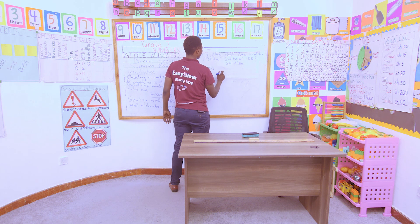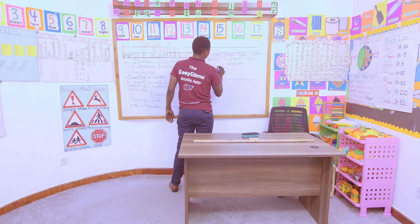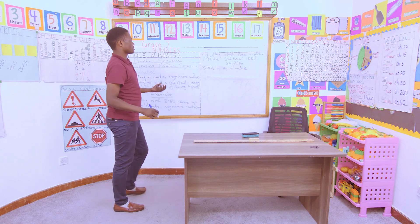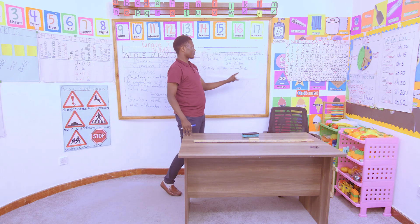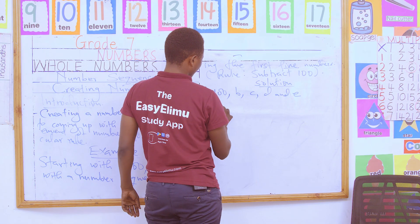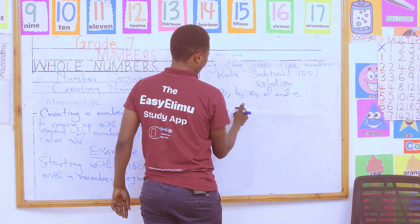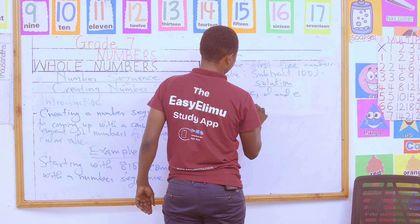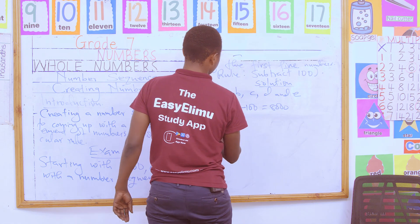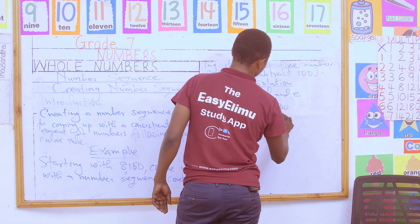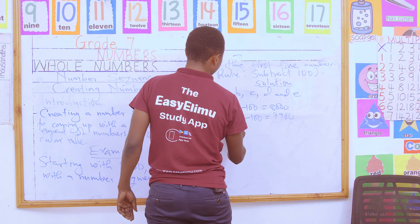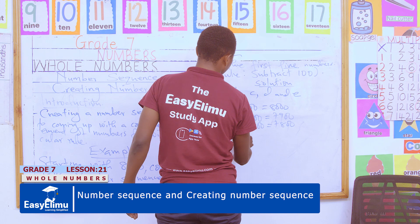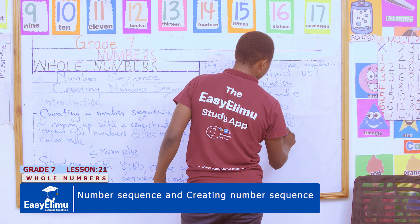Those variables will denote my subsequent terms after applying the rules. So I will have 8,100 as my first term. To get b: 8,100 minus 100 gives me 8,000. Then c: 8,000 minus 100 gives me 7,900. Then d: 7,900 minus 100 gives me 7,800. Then finally e: 7,800 minus 100 gives me 7,700.